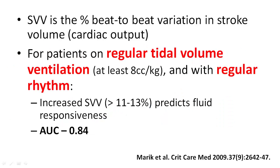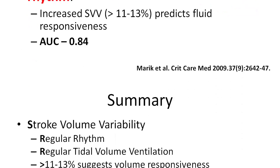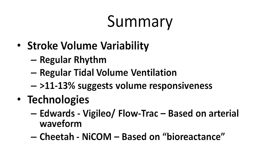As a summary, stroke volume variability is the beat-to-beat variation in stroke volume, but in order to be measured accurately, the patient must be on regular tidal volume ventilation, ideally at 8 cc's per kilogram, and the patient must have regular cardiac rhythm. If those two parameters are met, an increase in stroke volume variability of greater than 11 to 13 percent accurately predicts fluid responsiveness. This technology cannot be applied to patients with irregular arrhythmias or who are not ventilated.